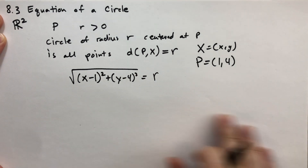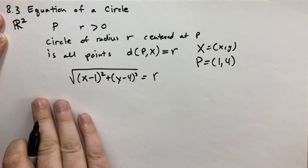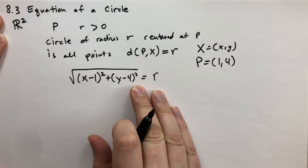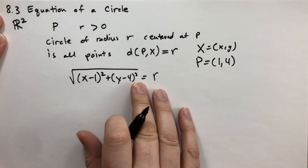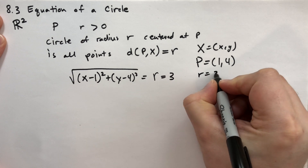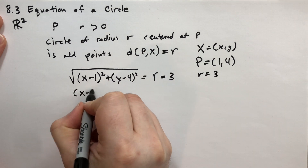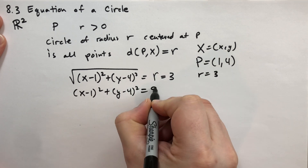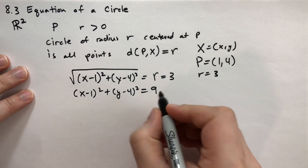This equation gives you all the points in the circle. If the radius is three, then R is 3. We could square both sides and get (x minus 1) squared plus (y minus 4) squared equals 9. Both of these forms could be equations of the circle.